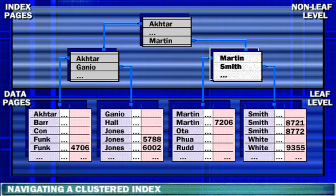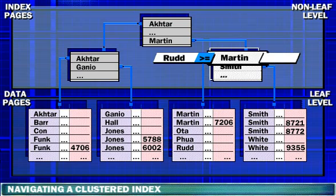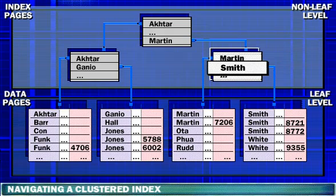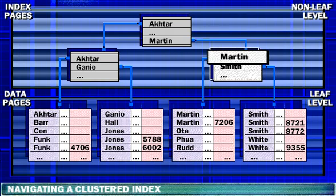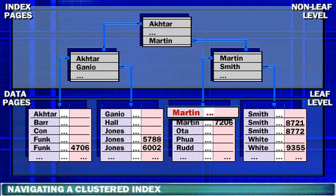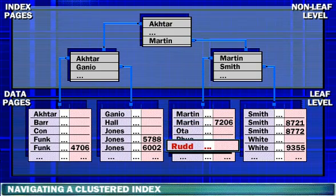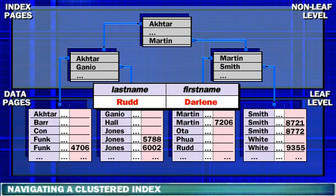SQL Server evaluates whether Rudd is greater than or equal to the key value Martin. The comparison evaluates to true and SQL Server moves to the next key value. SQL Server evaluates whether Rudd is greater than or equal to the key value Smith. The comparison evaluates to false. SQL Server uses the previous key value Martin and moves to the page at the next level to which Martin points. SQL Server reads through the data page until it finds Rudd, then returns the row to the query processor.